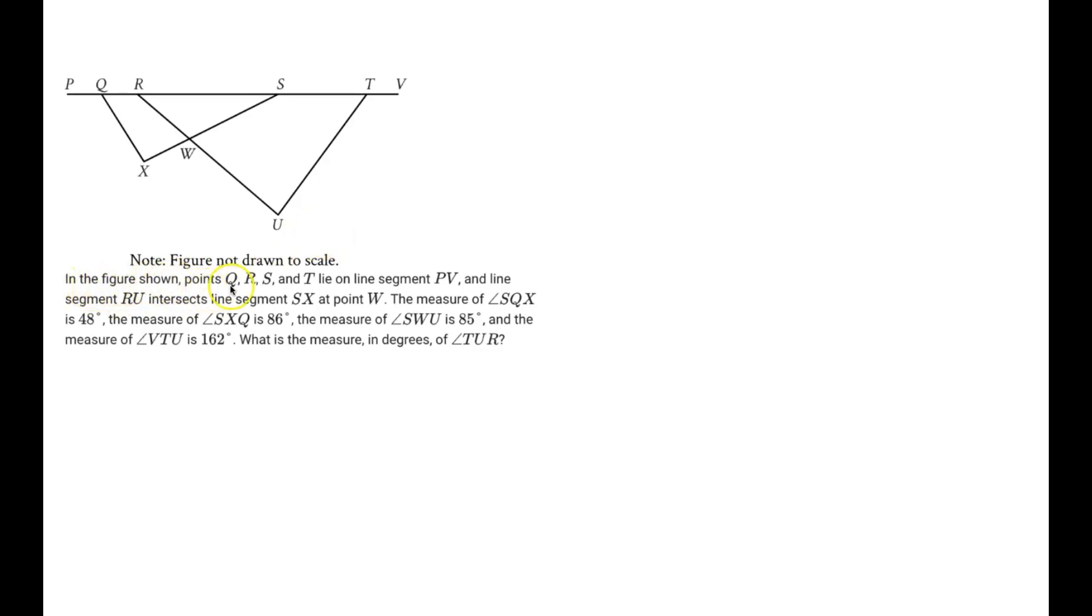So it says, in the figure shown, points Q, R, S, and T lie on the line segment PV, and the line segment RU intersects line segment SX at point W.